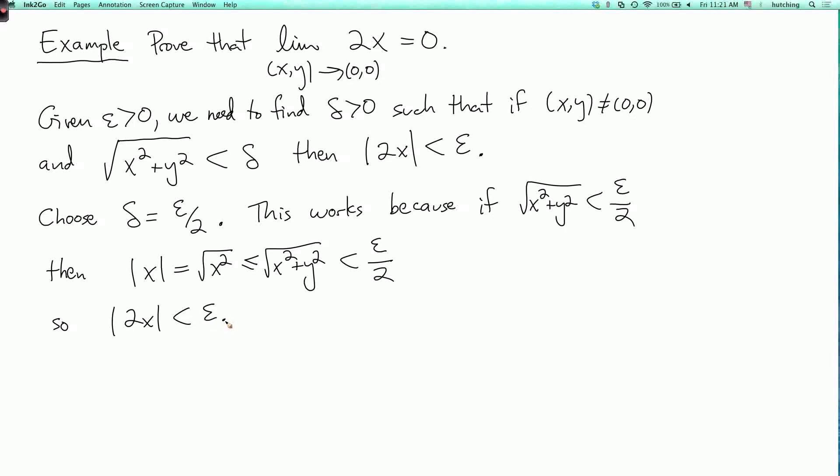So here my error tolerance is ε. Since we're multiplying by 2, in order to guarantee that we're within that error tolerance, we actually have to be twice as close. So δ has to be ε/2. You could also take δ to be something smaller than ε/2, and that would also work. So that's an example of proving that a limit exists using the definition.